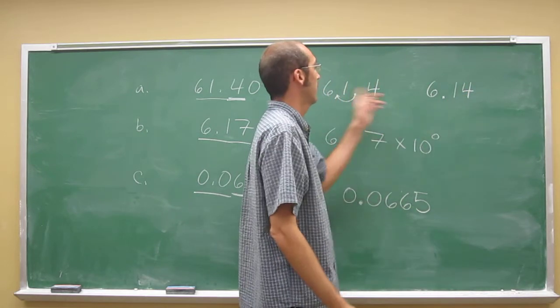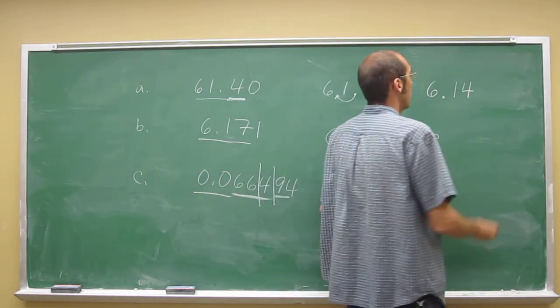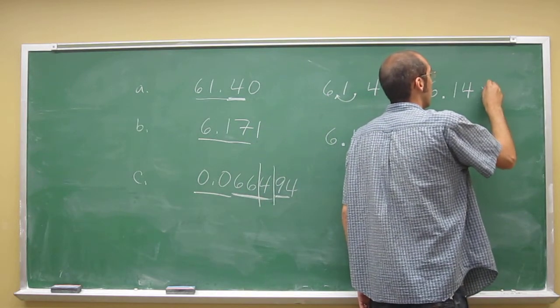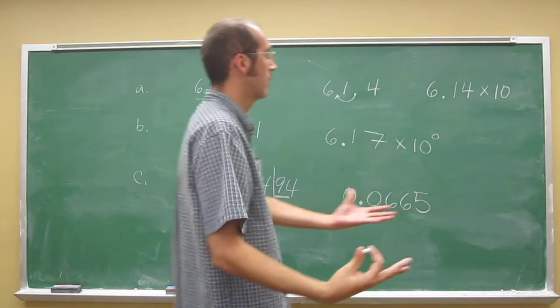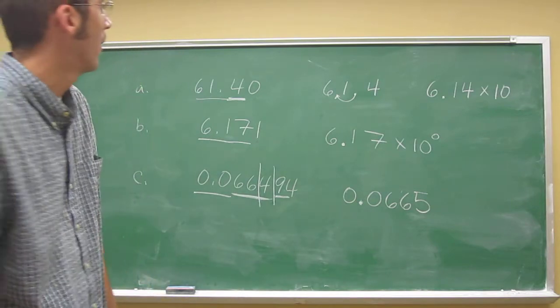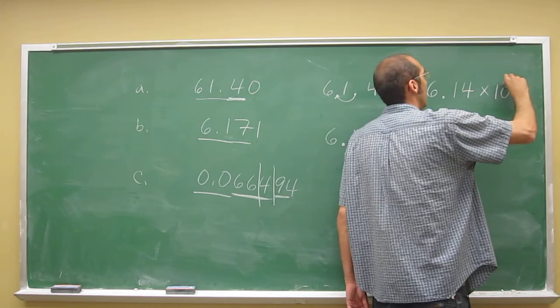Is 6.14 the same as 61.4? No. So we've got to do something to that to make it the same. We've got to multiply it by 10, right? Because 10 times 6.14, of course, is 61.4. If you need to do it on your calculators, that's what you got them for. Hopefully you don't.